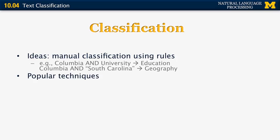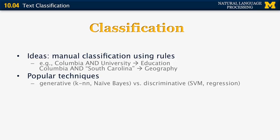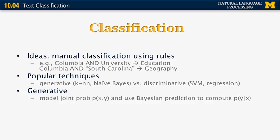Popular techniques fall into two general categories. One is generative models, which include k-nearest neighbors and Naive Bayes. The other is discriminative models, which include SVMs (support vector machines) and regression. In generative classification, you model the joint probability of X and Y, where X is the document and Y is the class, and use Bayesian prediction. In discriminative classification, you model the probability of Y given X directly.